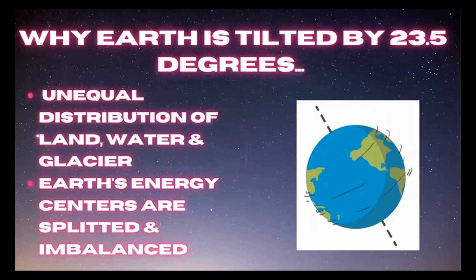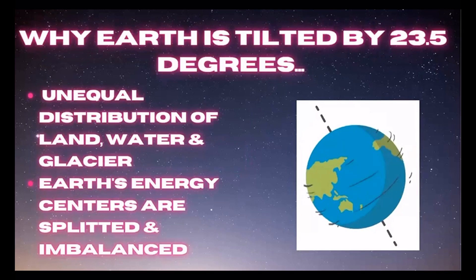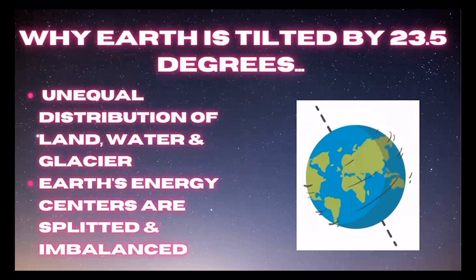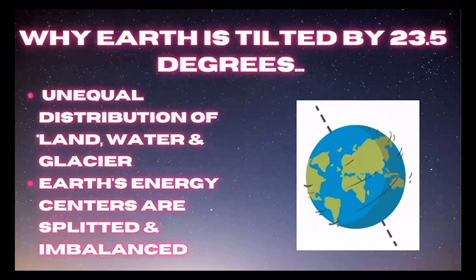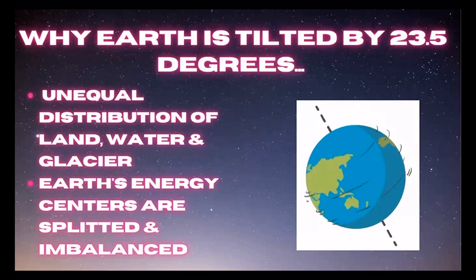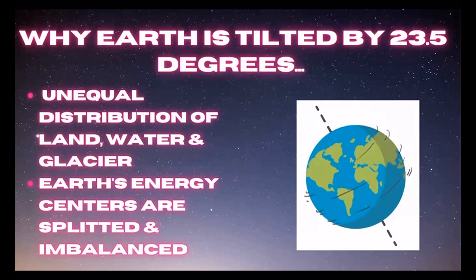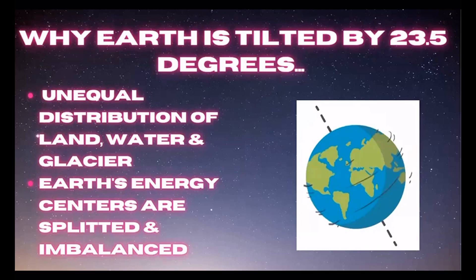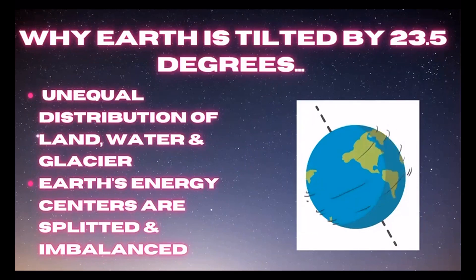Why is Earth tilted by 23.5 degrees? The reasons are: first, the unequal distribution of land, water, and glacier. Second, Earth's energy centers are split and are in an imbalanced condition.